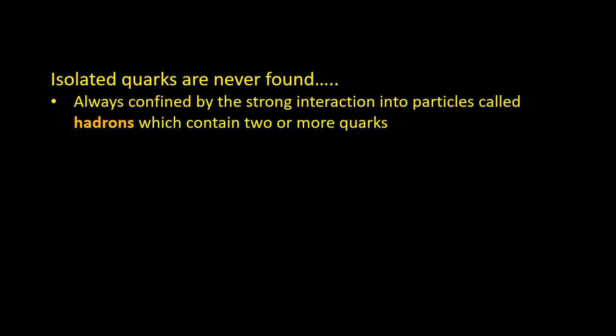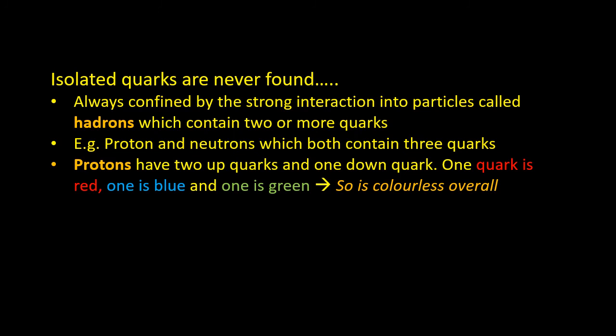Isolated quarks are never found in nature. They're confined by the strong interaction, which is so strong that it binds them together into particles called hadrons. A hadron contains two or more quarks. For example, protons and neutrons both contain three quarks. A proton is made up of two up and one down quarks. These quarks are constantly changing colour. But at a given instant in time, there's always one red, one blue and one green quark within a proton. When you combine red, blue and green colour charge, it makes a colour charge of white. So overall, the proton is colourless. That means it carries no colour charge.